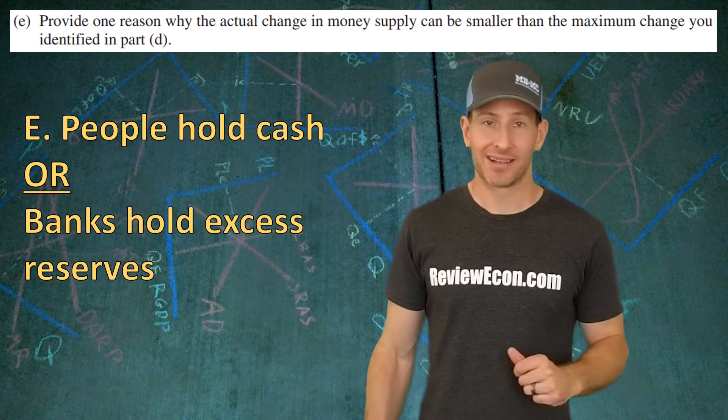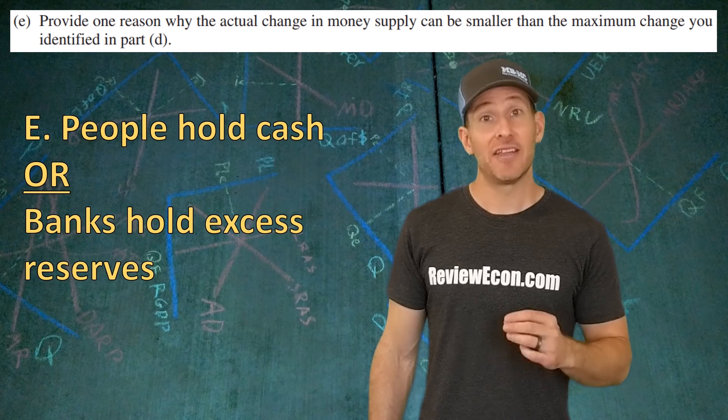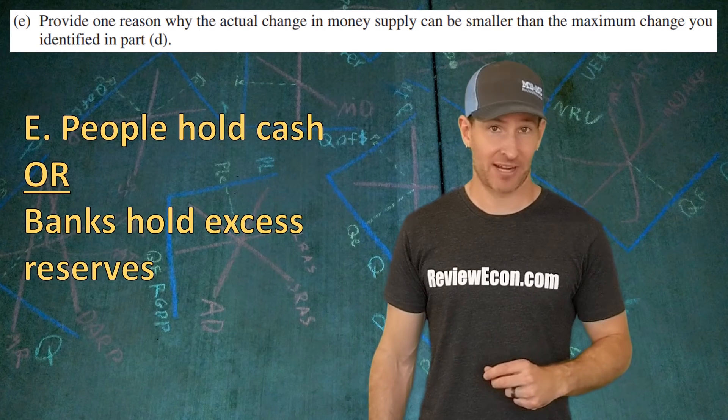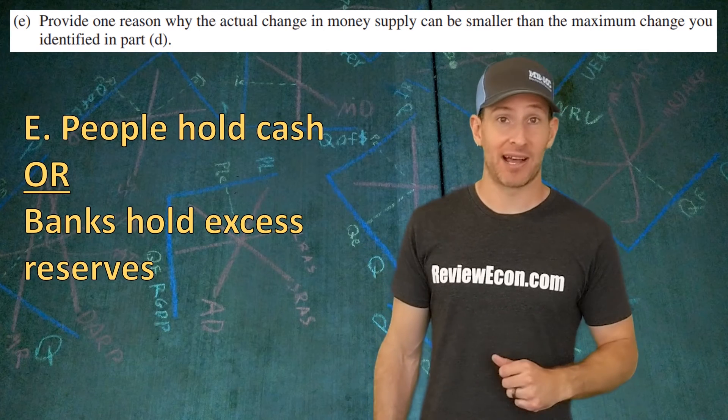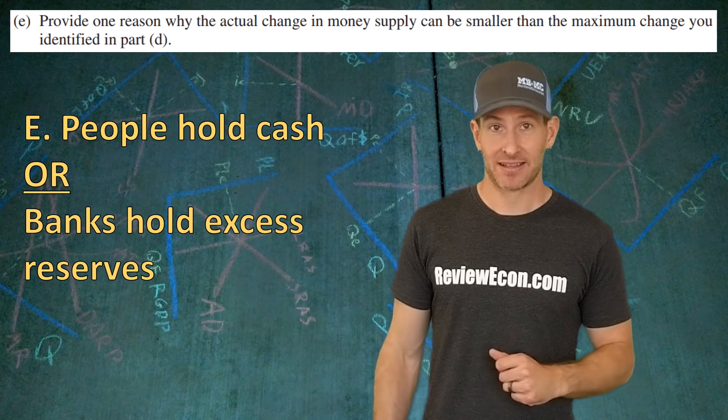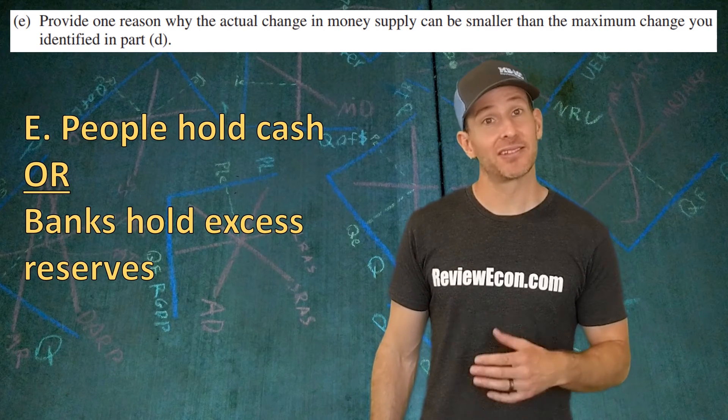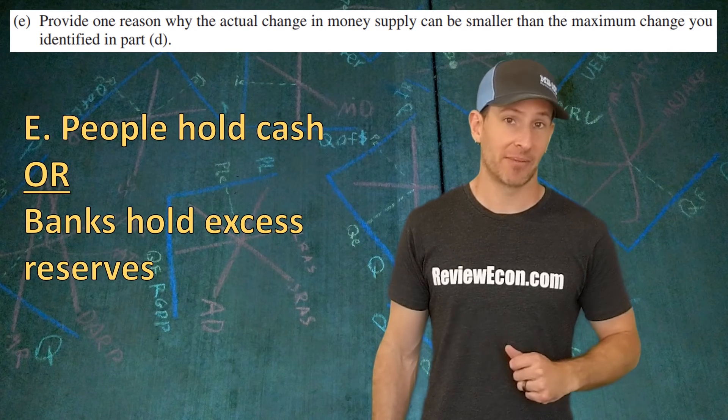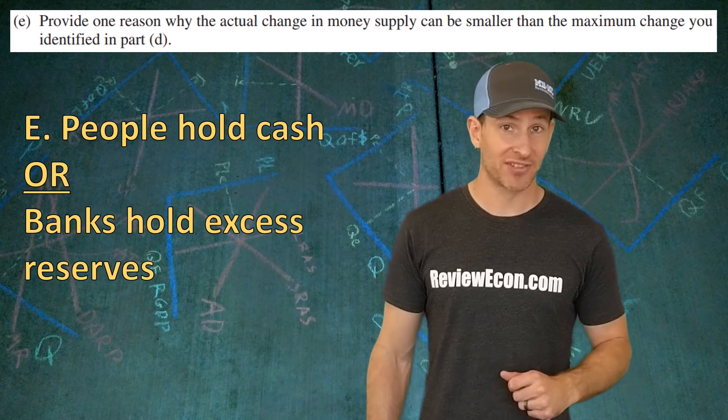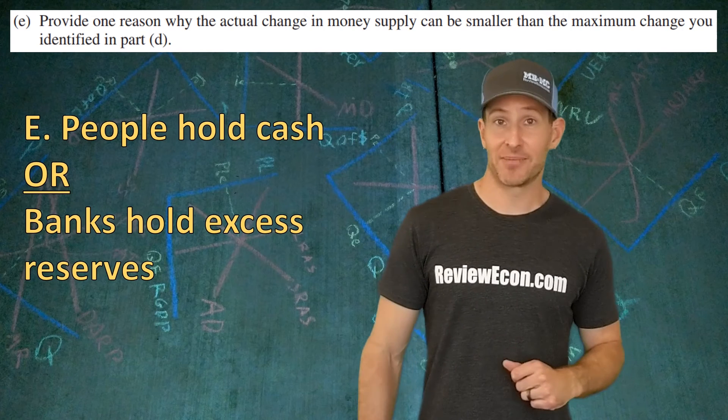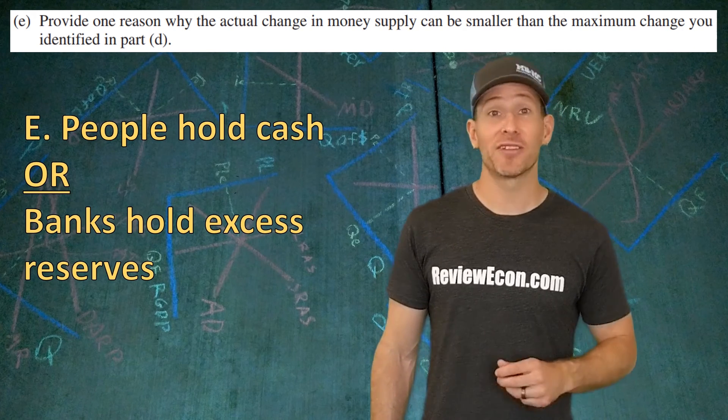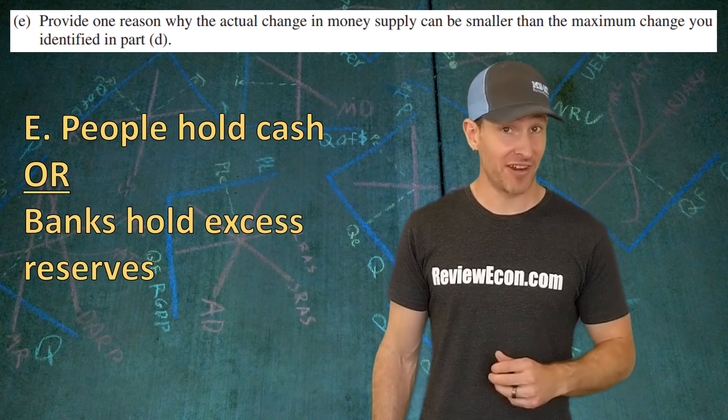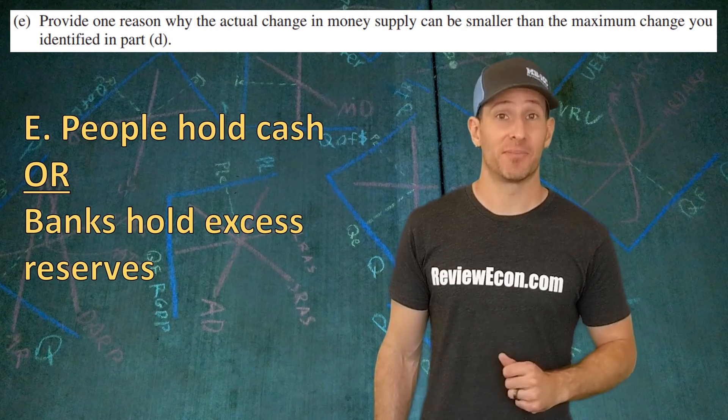First of all, most people hold some cash. If you are holding cash in your wallet right now, you are preventing that money from multiplying throughout the system. Also, banks often don't loan out all of their money. If banks hold excess reserves, they are also preventing the money multiplier from reaching its maximum potential. Either one of those answers, and any variation of those, will get you the point here.